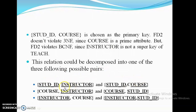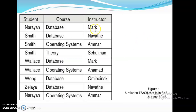The second option is Course-Instructor: which course is handled by which instructor. Instructor can be given as a primary key. For example, Mark handles only Database, Navate handles only Database, and Amar handles only Operating System, and Shulman handles only Theory of Computation. So Instructor is not repeating — each instructor is mapped with only one course, making Instructor the primary key.